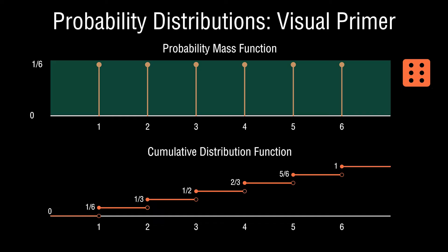In fact, there is a 100% chance the outcome will be less than or equal to seven, eight, or any other outcome beyond six. That highlights a key aspect of the cumulative distribution: it is by definition bounded between the values of zero and one. So we've introduced the concept of a random variable, probability mass function, and cumulative distribution function, applied to the case of rolling a die.